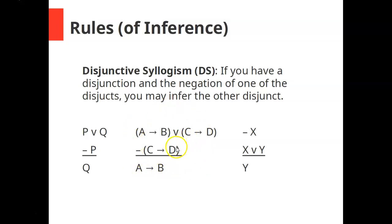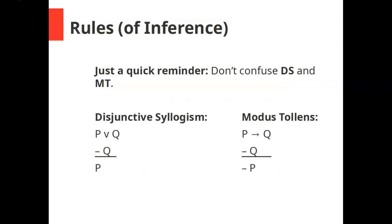You have a disjunction and the negation of one of the disjuncts, and you infer the other disjunct. It doesn't matter what order they come in — you're still allowed to infer the other disjunct. One thing to keep in mind with disjunctive syllogism: don't mix it up with modus tollens. In disjunctive syllogism you have a disjunction and the negation of a disjunct. With modus tollens you have a conditional and the negation of the consequent, and you infer the negation of the antecedent. You might accidentally confuse these two — disjunctive syllogism and modus tollens — so you want to avoid that.